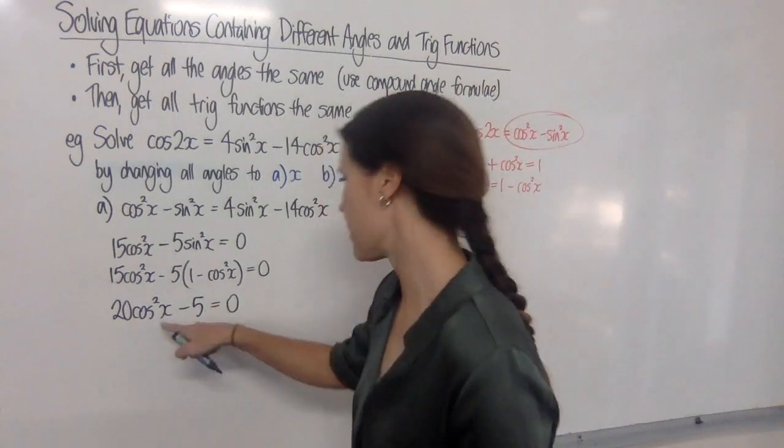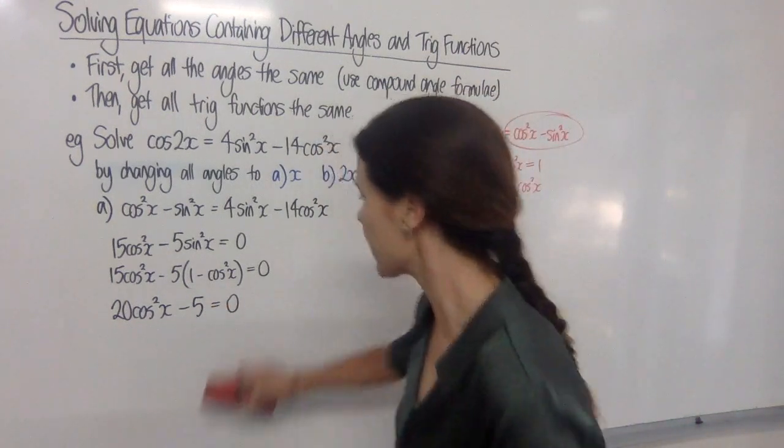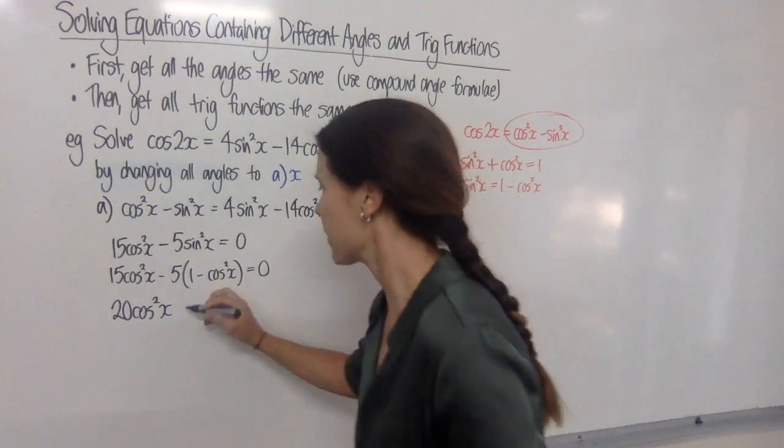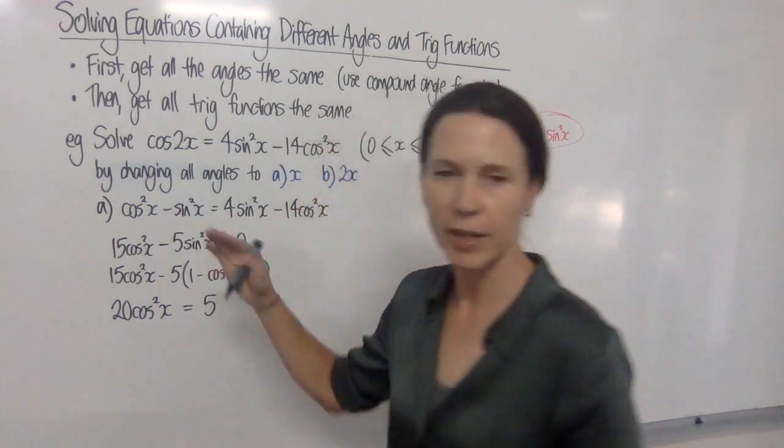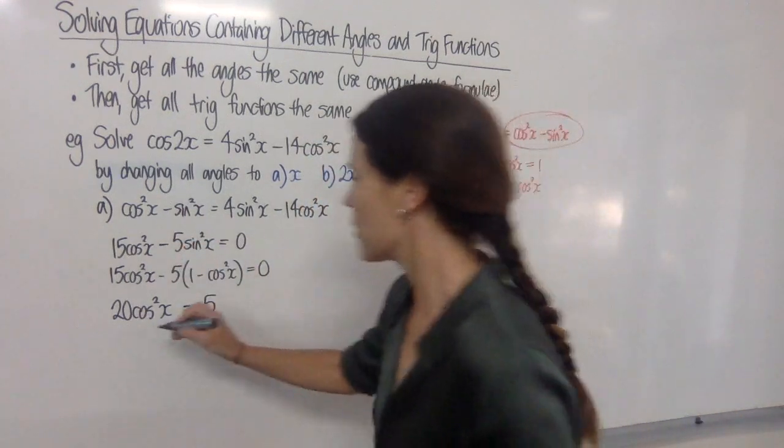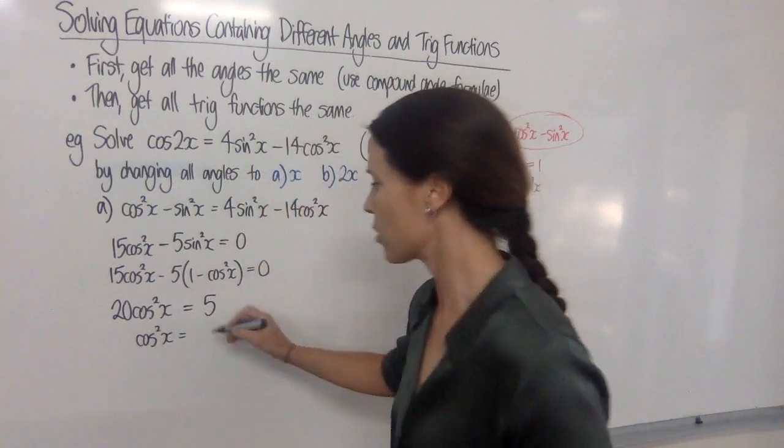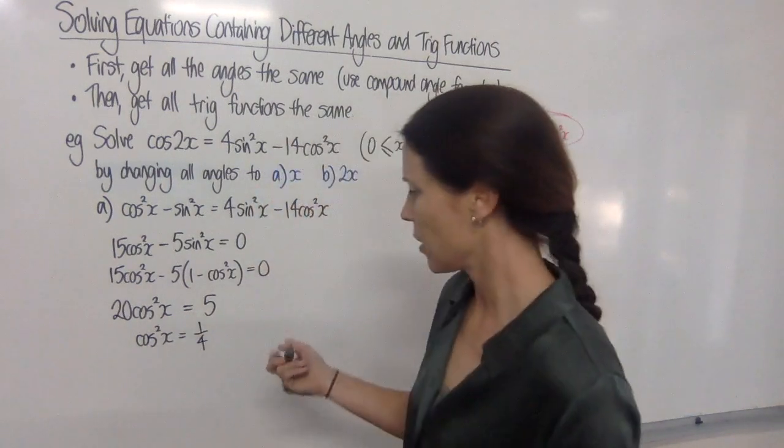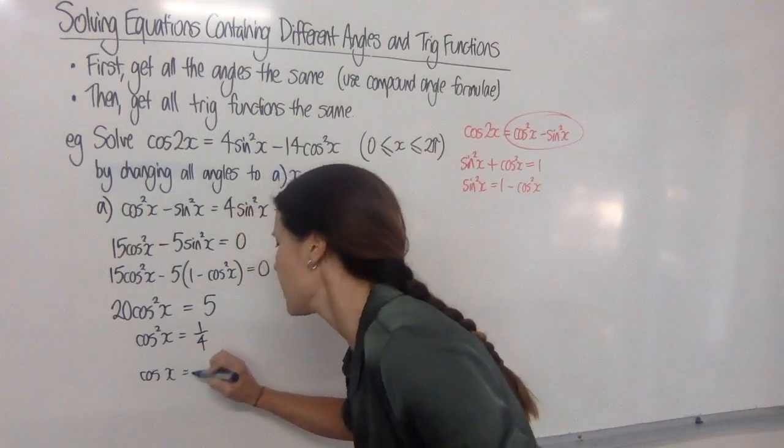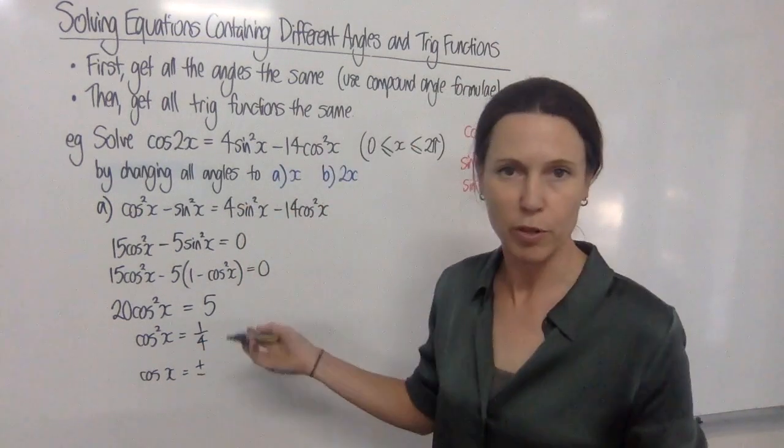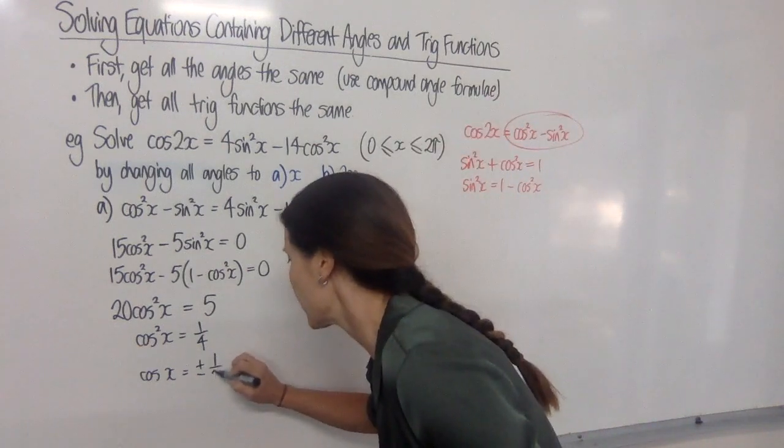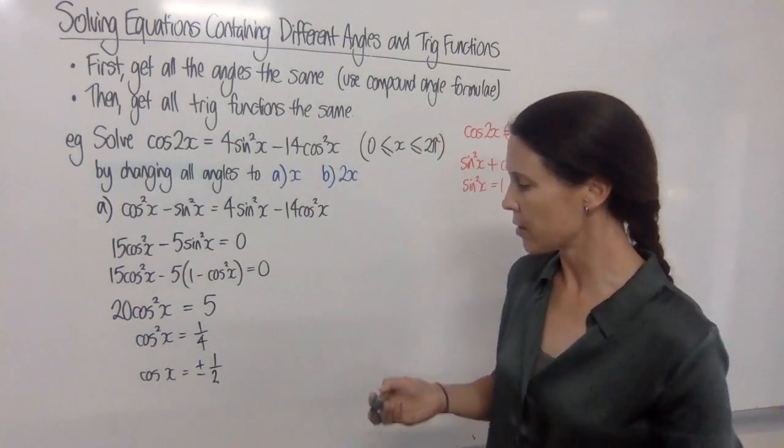Or perhaps you would have skipped ahead and said, look, I can add 5 to both sides there straight away and say that it equals 5. Either way, you could do it there or the next line. So then cos squared x must be equal to 5 over 20, which is a quarter. So now cos x must be the plus or minus square root of a quarter, which is actually a half because a half times a half is a quarter.